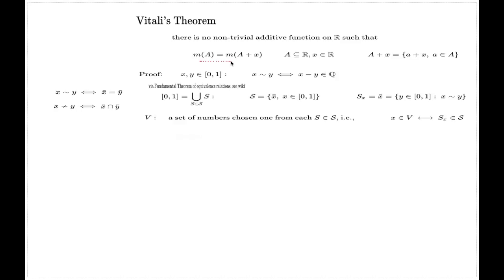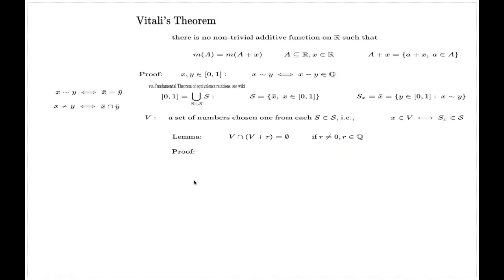Now the proof of the theorem — that there is no additive set function which is also translation invariant — is based on the following lemma: the Vitali set V does not intersect with the shifted or translated Vitali set, as long as you look at a non-trivial rational translation r. That is, V intersect (V plus r) is empty for any non-zero rational r.